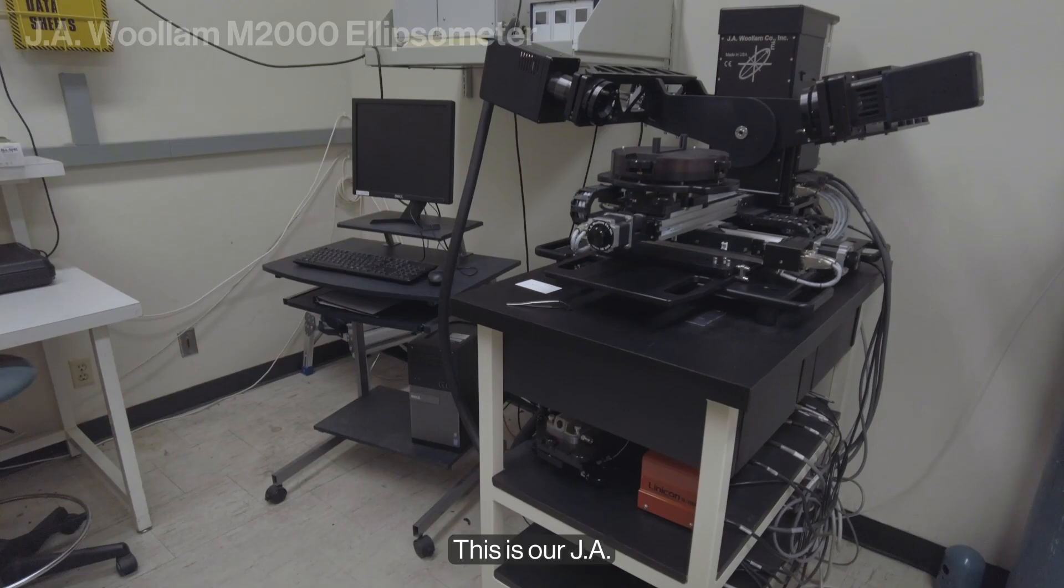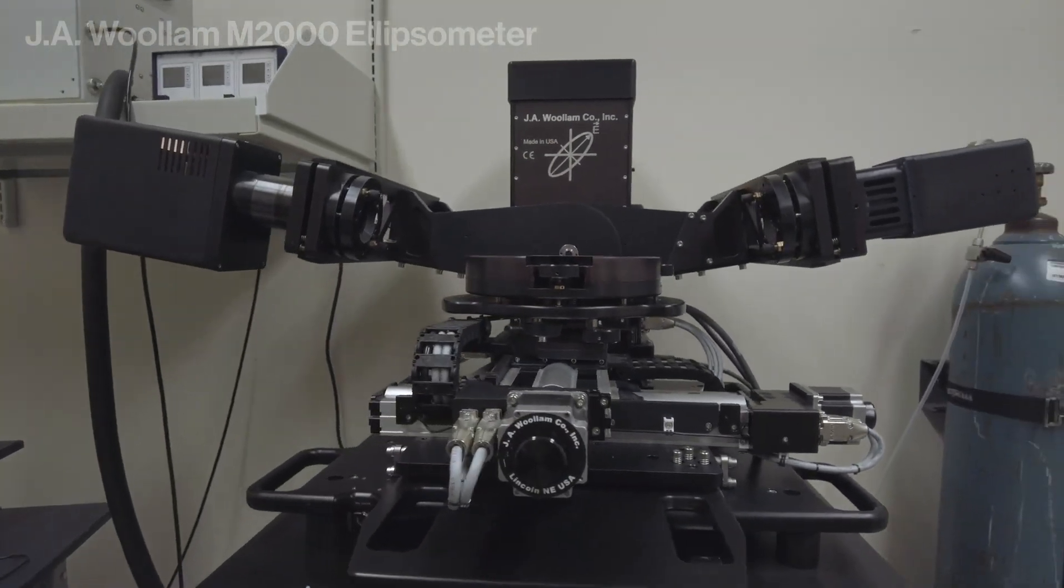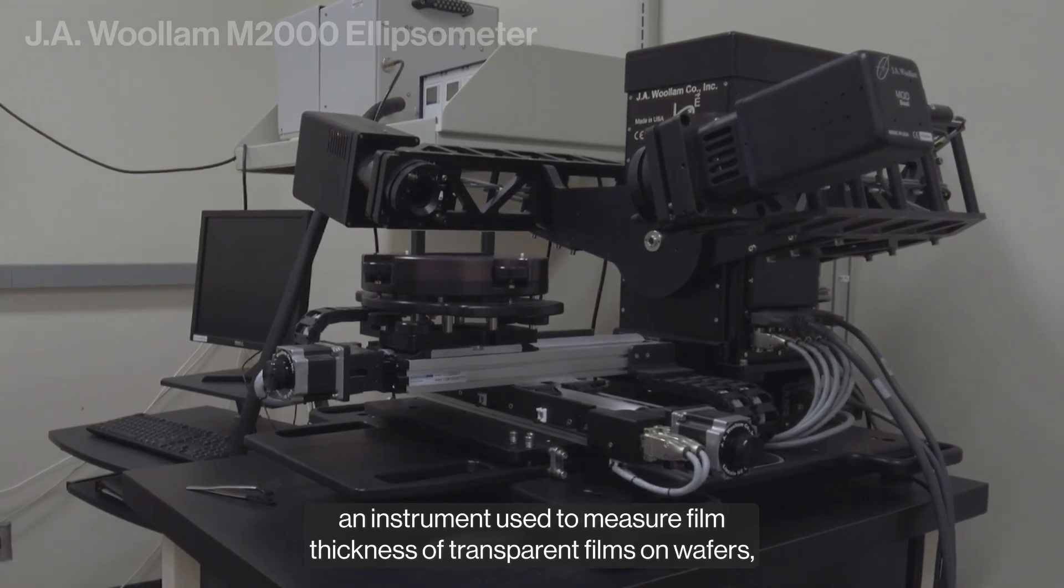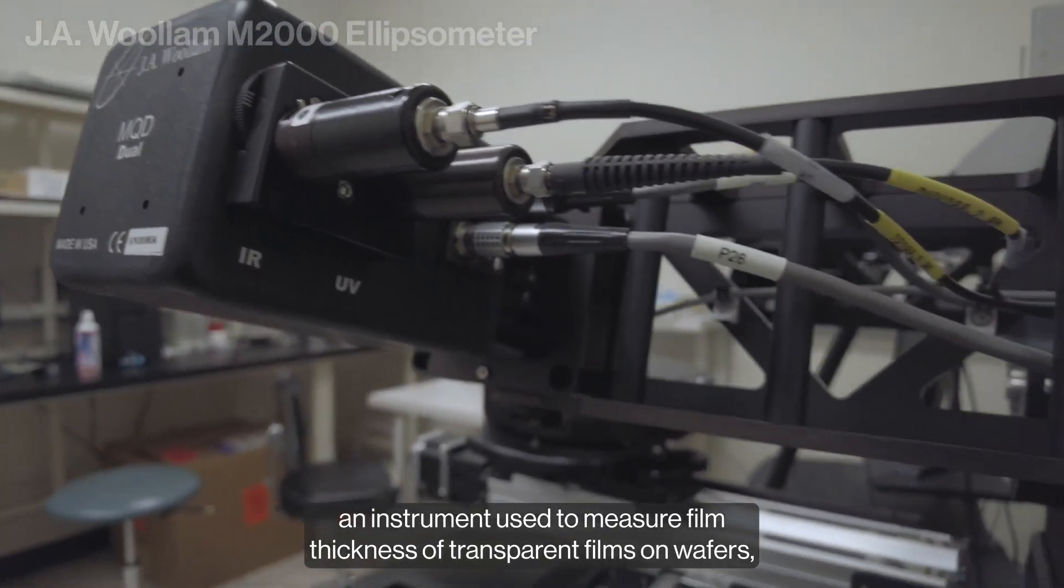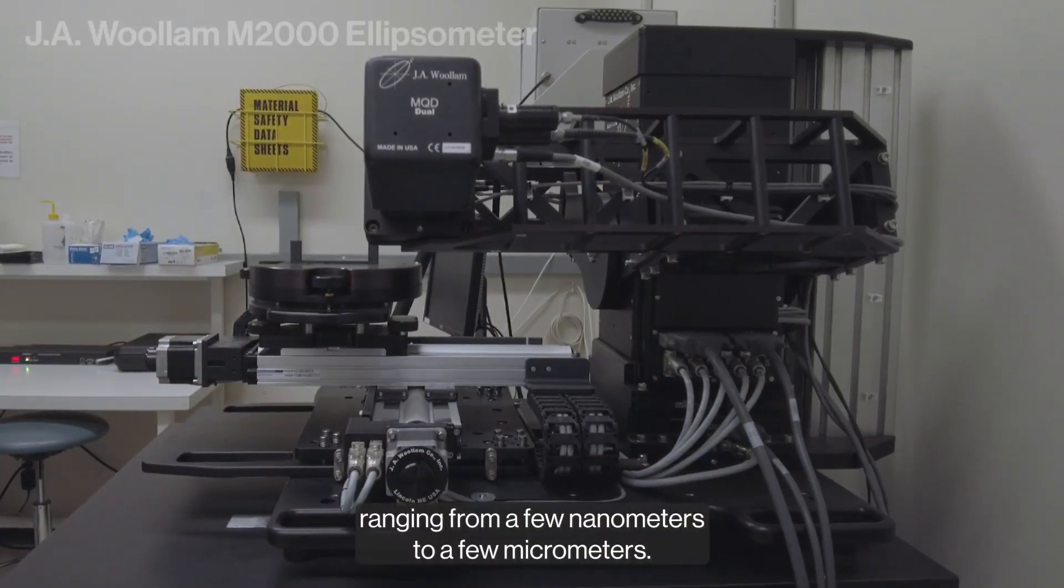This is our JA Woollam M2000 spectroscopic ellipsometer, an instrument used to measure film thickness of transparent films on wafers ranging from a few nanometers to a few micrometers.